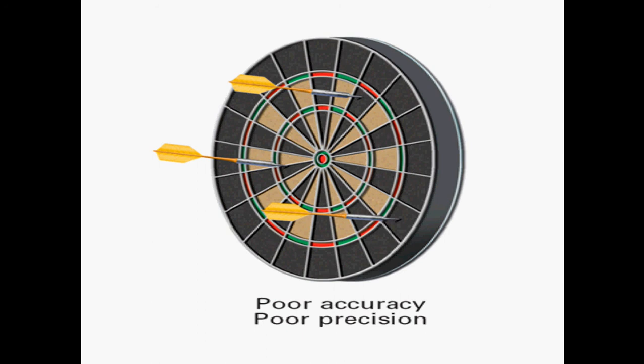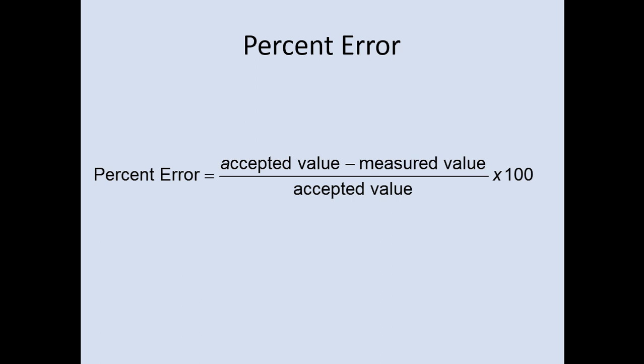Two calculations you will make quite often are percent error calculations. Be sure to write these two down so you can refer to them. Percent error is your accepted value minus your measured value. Take the difference between them and then divide by the accepted value and multiply by 100. We'll practice this in class.